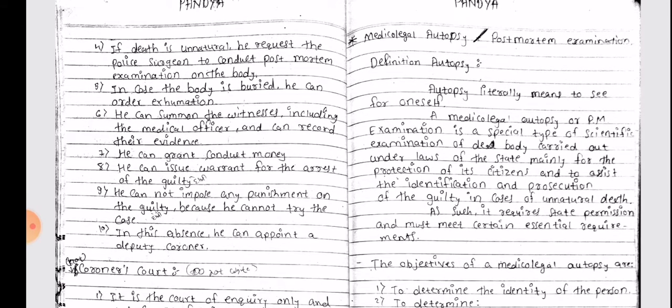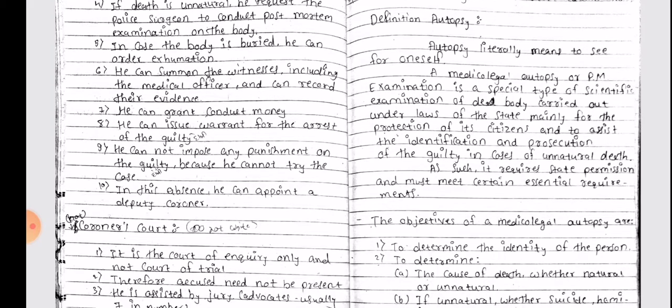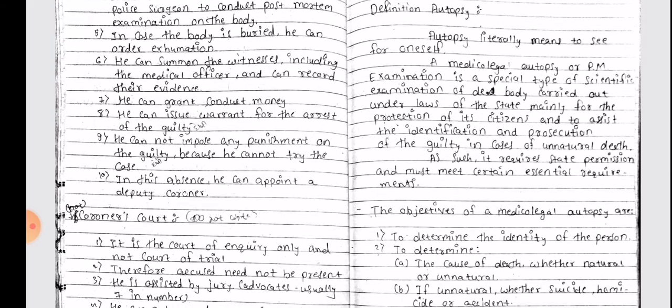In case the body is buried, he can order exhumation. He can summon witnesses including medical officers and can record their evidence. He can grant conduct money. He can issue a warrant for the arrest of the guilty, but he cannot impose any punishment on the guilty because he cannot try the case. In his absence, he can appoint a deputy coroner.